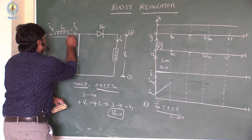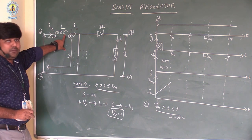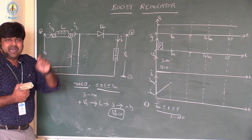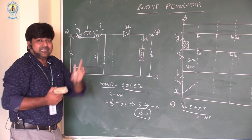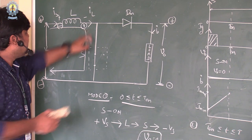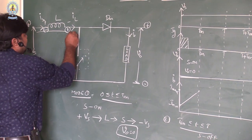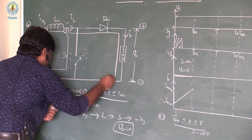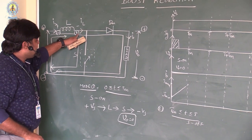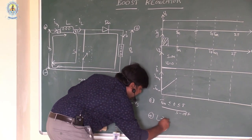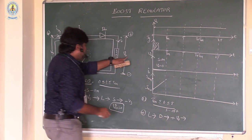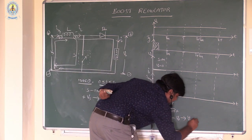The polarity of the inductor reverses. When energy is taken from the source, the polarity is plus-minus. When the inductor starts discharging, the polarity becomes minus-plus. In Mode 2, the inductor acts as a source and starts discharging. The current path is from the inductor through the diode to the load, then back through the source. The voltage across the load V0 equals the supply voltage Vs.